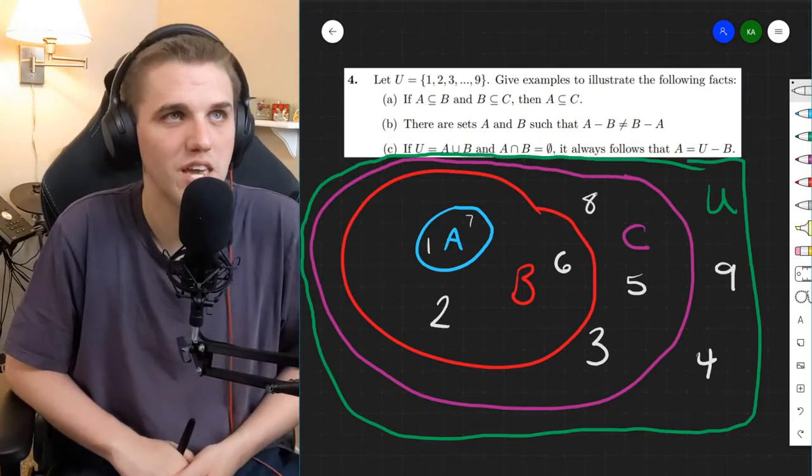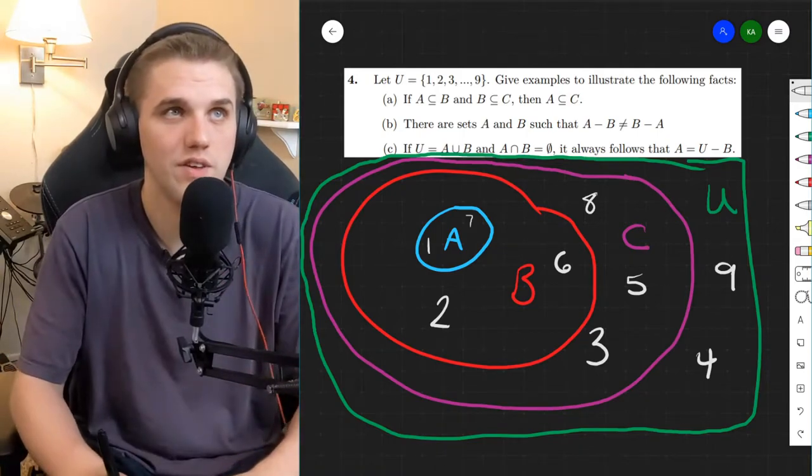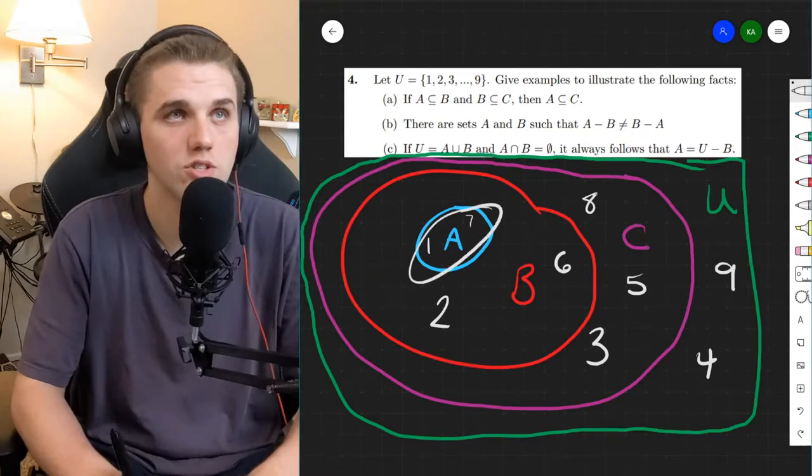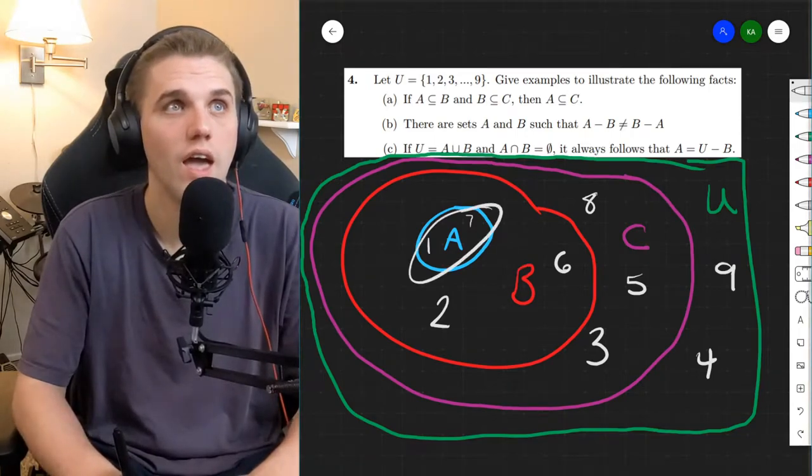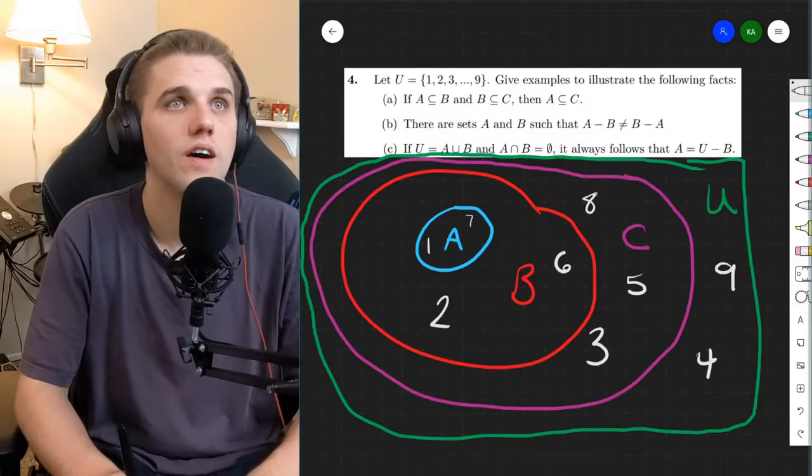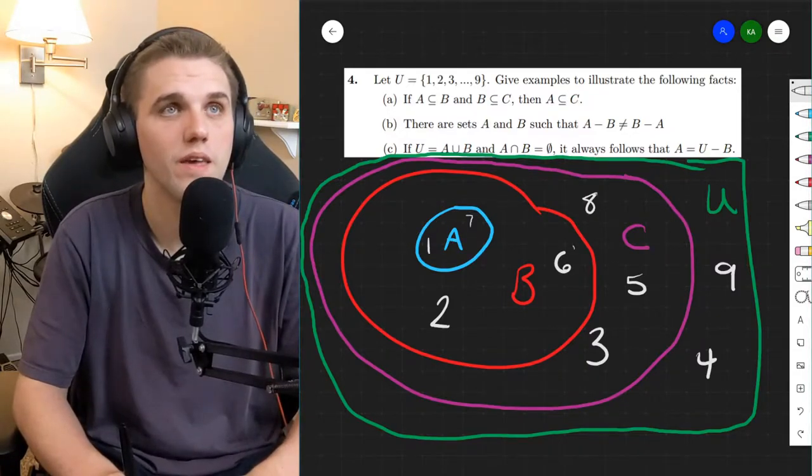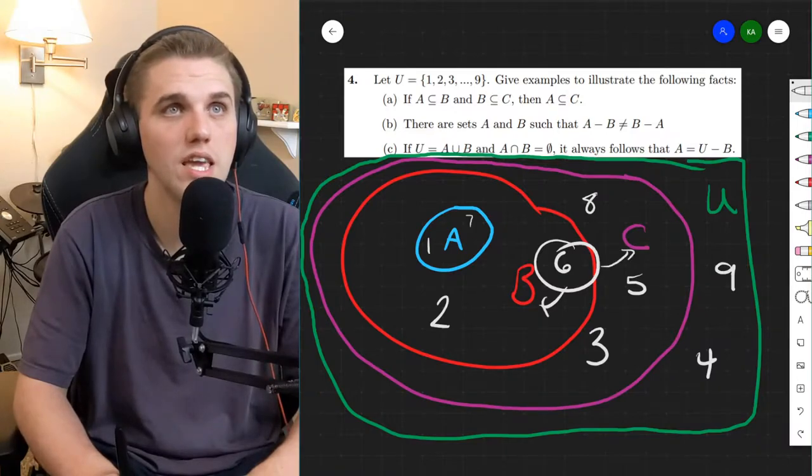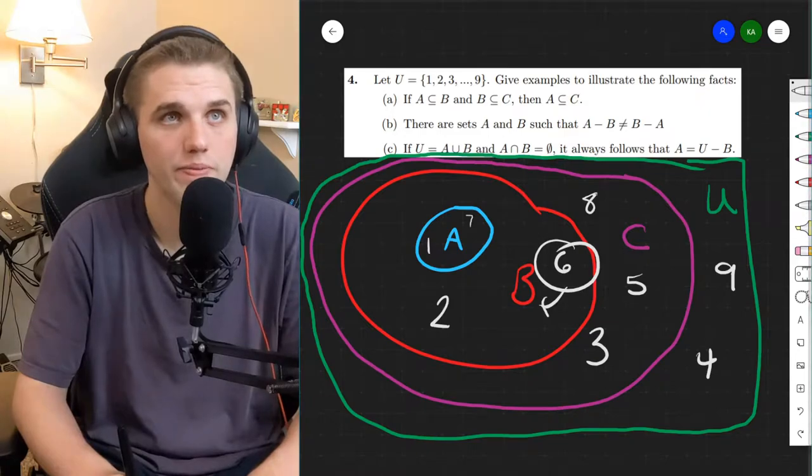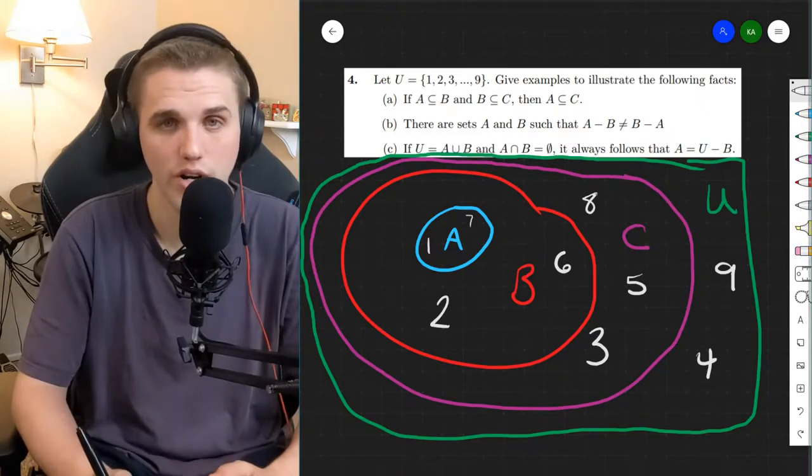So in this specific case, we can see that one and seven is in A. But one and seven is also in B. And one and seven is also in C. And six is in B and C. But six is not in A. So this works.